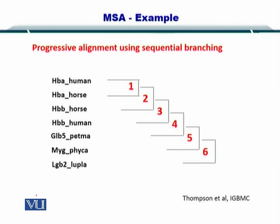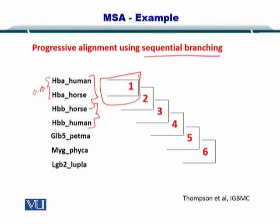Using these distances, we can create a sequential branching, wherein HBA human and HBA horse, which had a distance of just 0.13, are the closest. This is followed by HBB horse and HBB human, as you just saw, and the entire tree is constructed in that way. This is called sequential branching, and you can construct this using progressive alignment.